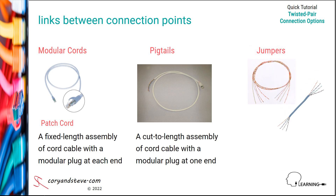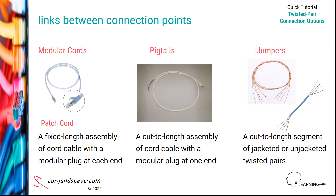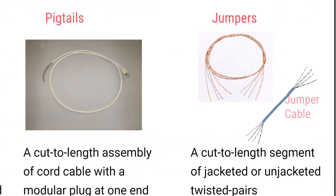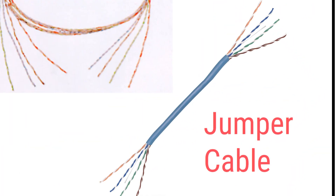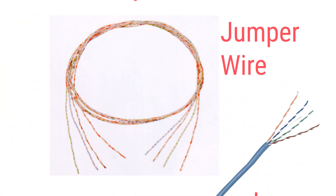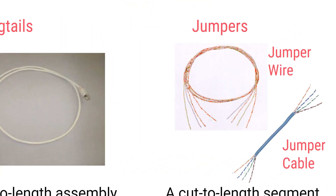A jumper is simply a length of jacketed or unjacketed twisted pair cable without a modular plug at either end. If the jumper is jacketed, it's referred to as a jumper cable. If there's no jacket, the term jumper wire applies.